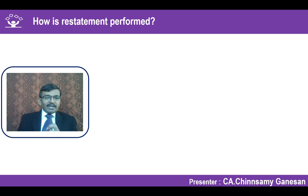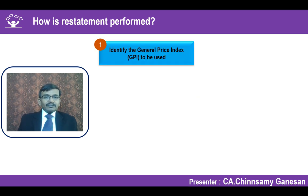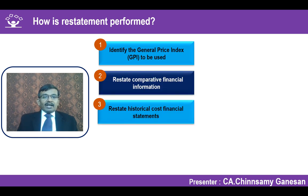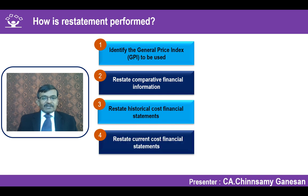How the restatement is performed — a step-by-step process: Step one, identify the general price index (GPI). Step two, restate comparative financial information. Step three, restate the current year historical cost financial statements. Step four, if prepared on a current cost basis, that should also be restated. Step five, account for resulting profits or gains or losses arising from restatement of the net monetary position.